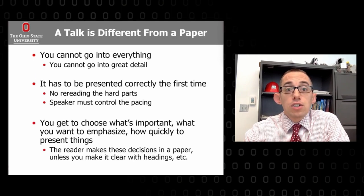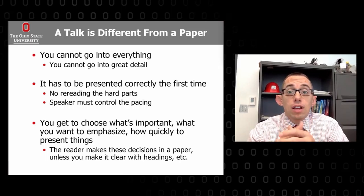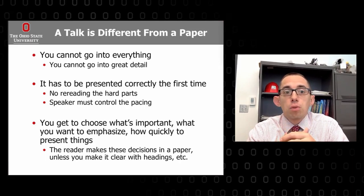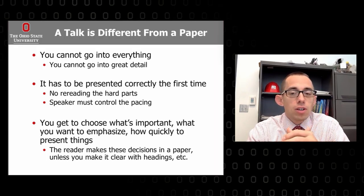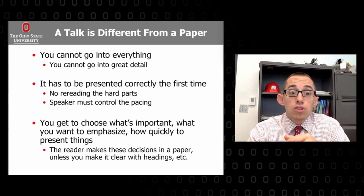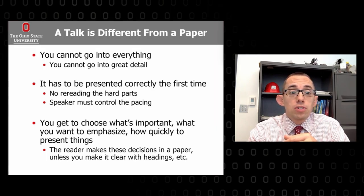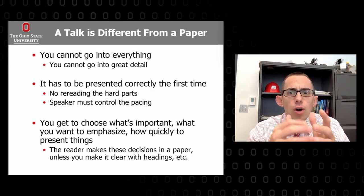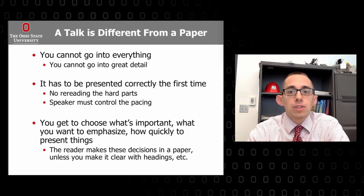It's important to realize that a talk is much different from a paper. You can't go into every little detail in a talk as you can in a paper — papers are just much, much longer. In a talk, content has to be presented correctly the first time; you can't go back and re-read the hard parts. The speaker controls the pacing, chooses what's important, what to emphasize or de-emphasize, and how quickly to present things. In a paper, all this control lies with the reader, unless the writer is really good at using headings, subheadings, and chapter titles. In a talk, it's all about how well the speaker plans and chooses what to emphasize or de-emphasize.